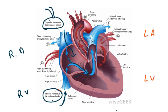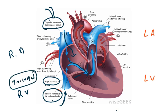Atria and ventricle are separated by special valves known as atrioventricular valves — AV valves, where A means atria and V means ventricle. They are also known as tricuspid valves. The job of this valve is to enable unidirectional flow of blood, meaning blood moves from atria to ventricle only.